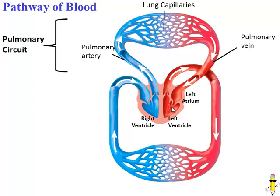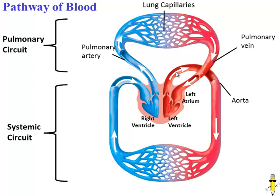The pulmonary vein carries oxygenated blood back into the left atrium. From there, the blood moves into the left ventricle. The left ventricle is very powerful and pumps the blood into the systemic circuit. The aorta is the first step in the systemic circuit — this large artery branches off into smaller arteries, then arterioles, and eventually capillaries surrounding all your body organs. The color change tells us that blood in the capillaries is dropping off oxygen for your cells and picking up carbon dioxide, as well as exchanging other materials.